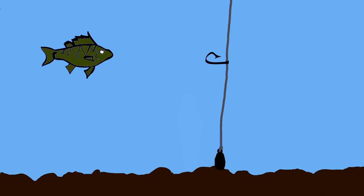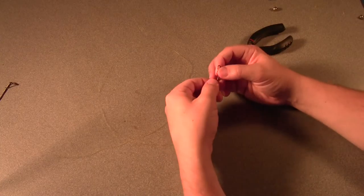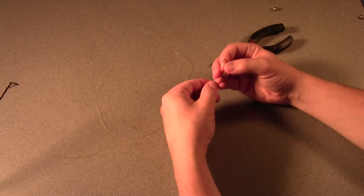With a drop shot rig, the sinker is at the end of the line, and then back up the line, usually a foot or two or a little bit more than that, is the hook. So today I'm just going to take a few moments and show you how to tie one of these up.